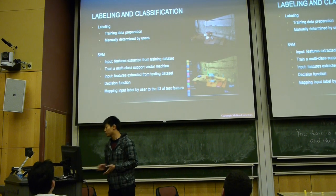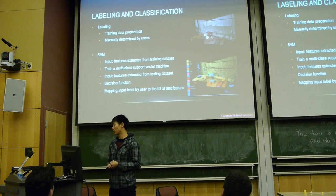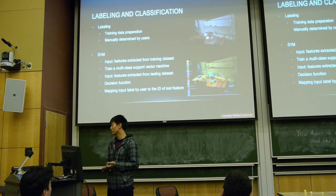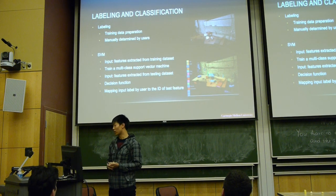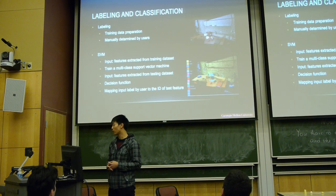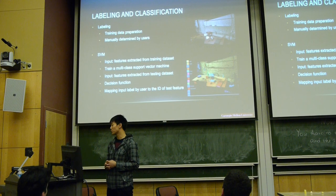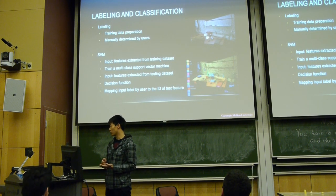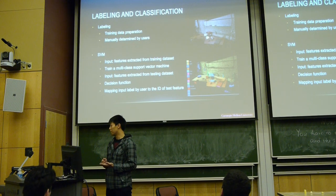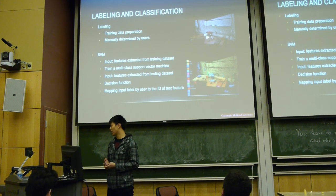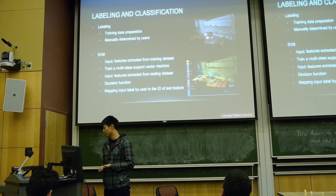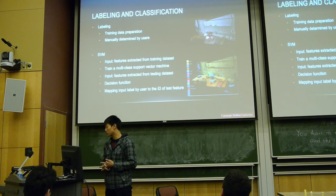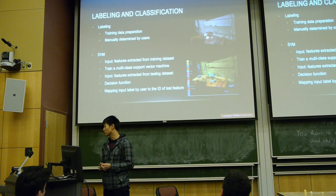And after registration is the labeling and classification. Labeling is part of the training data preparation. This part is manual, for the user to define the surface, to define the group of point clouds and label it as the user's expectation. And then I use support vector machine to classify these different layers.